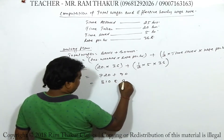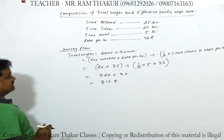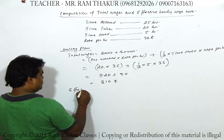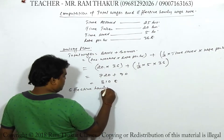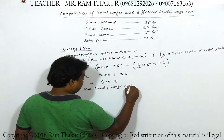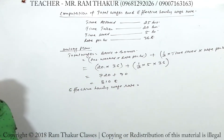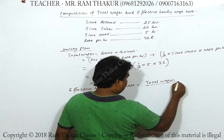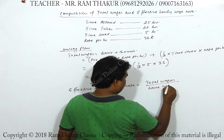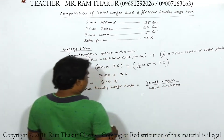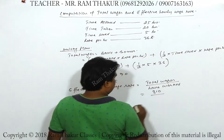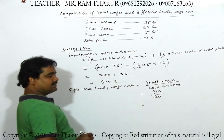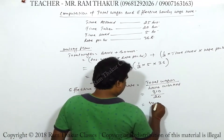Total wages under Halsey plan = 810 rupees. Effective hourly wage rate = Total wages ÷ Hours worked = 810 ÷ 20 = 40.5 rupees per hour. यह answer Halsey plan के हिसाब से हुआ।